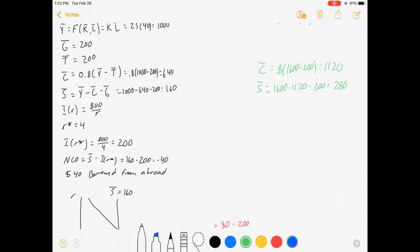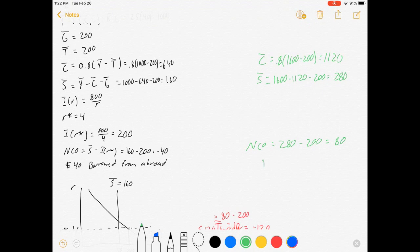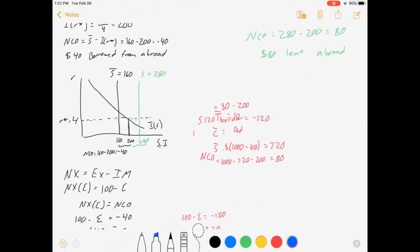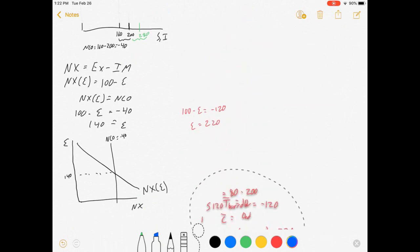Which means S changed equals 1600 minus 1120 minus 200 equals 280. Investment didn't change, it's still 200, which means our net capital flows, savings minus investment, it's gone positive. This is now $80 lent abroad.